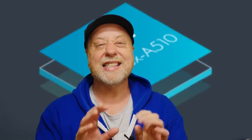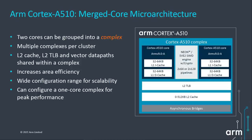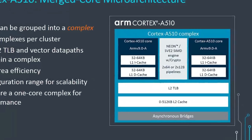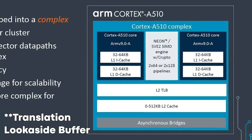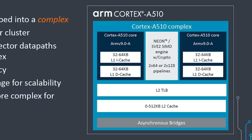The merged core architecture is somewhat like that — it's a shared core — but not exactly. Basically, two cores can be grouped together in a unit called a complex. In a complex, the main part of the CPU core remains independent. However, a few things are shared: the L2 cache is shared between the two processors, the L2 TLB table is shared, and importantly, the mathematics engine — the Neon floating point engine and the SVE2 single instruction multiple data engine — is shared between the two.